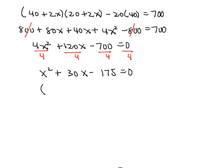Now this will factor fairly easily into X plus 35 times X minus 5, and setting each factor to 0, we see that X equals either negative 35 or X equals 5.